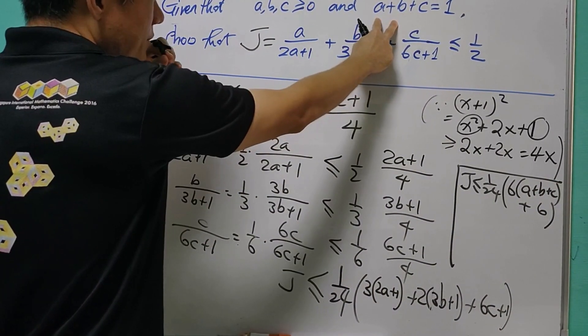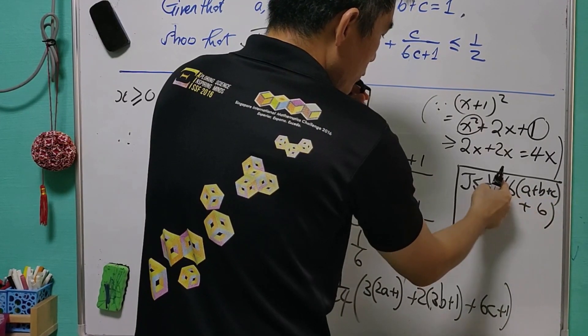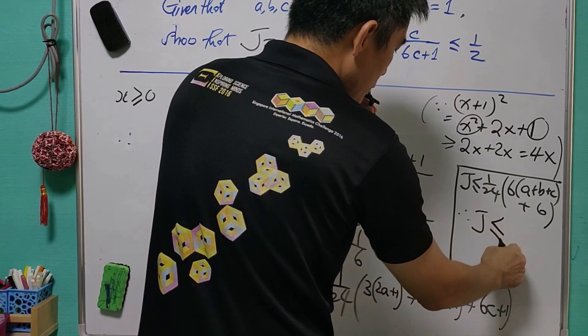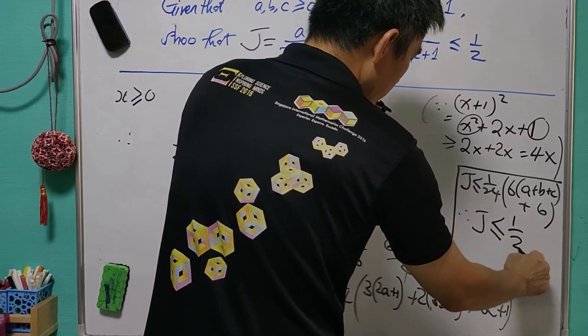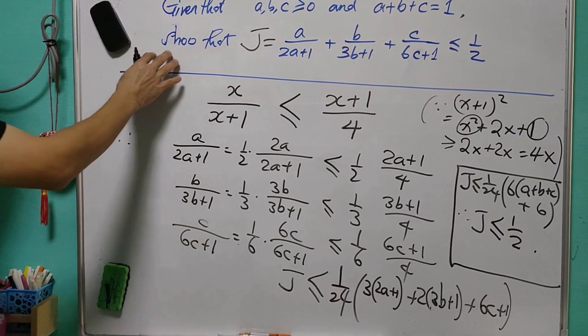Since the sum of ABC equals 1, so this is 6 plus 6, that is 12. Of 12 over 24, it means that J will be less than or equal to 1 over 2. And with this, we have shown the inequality.